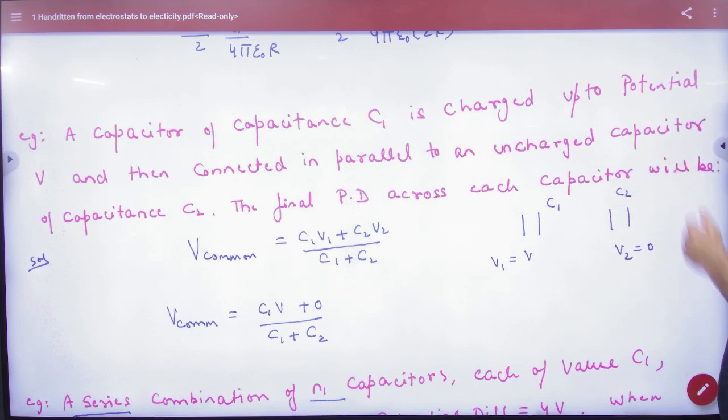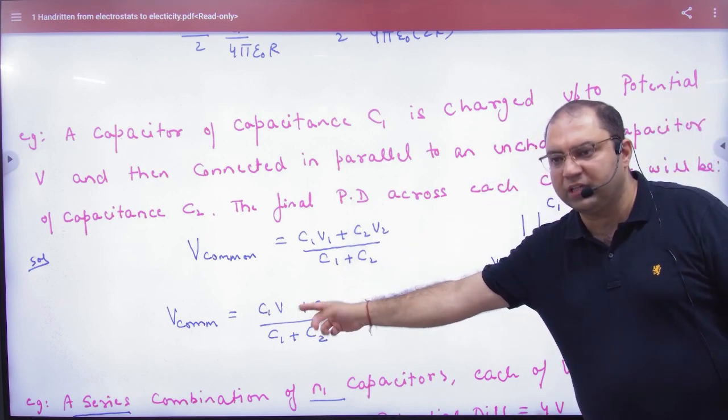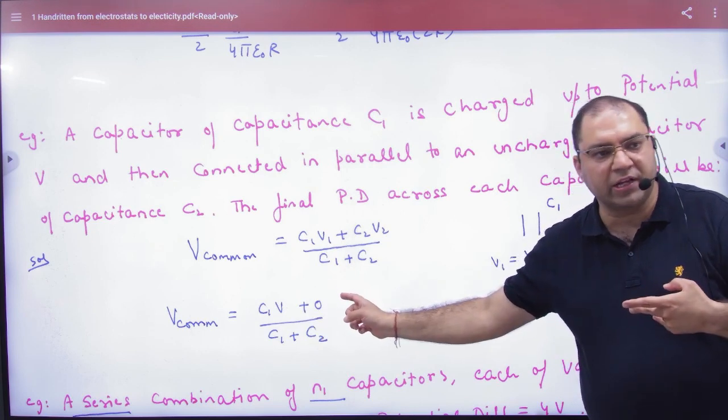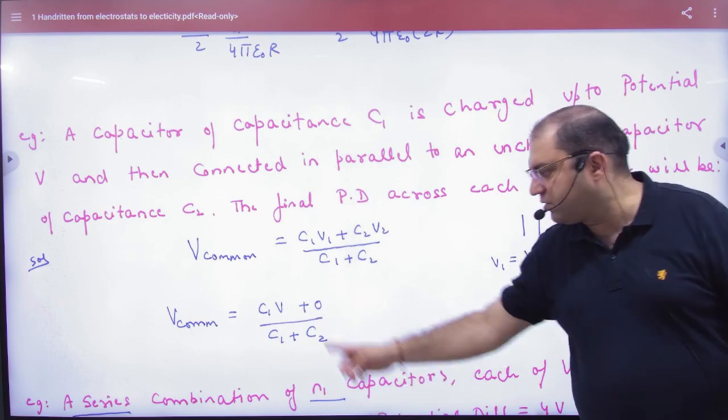Some people think that C2 is zero. C2 is not zero, you don't have water but the capacity will remain. So C2 will remain, V2 is zero. So what do you want to tell? What is the potential difference across each capacitor? What will happen when they connect? So the common potential is asking. So C1 into V plus second capacitor V0 is upon C1 plus C2 is the answer.